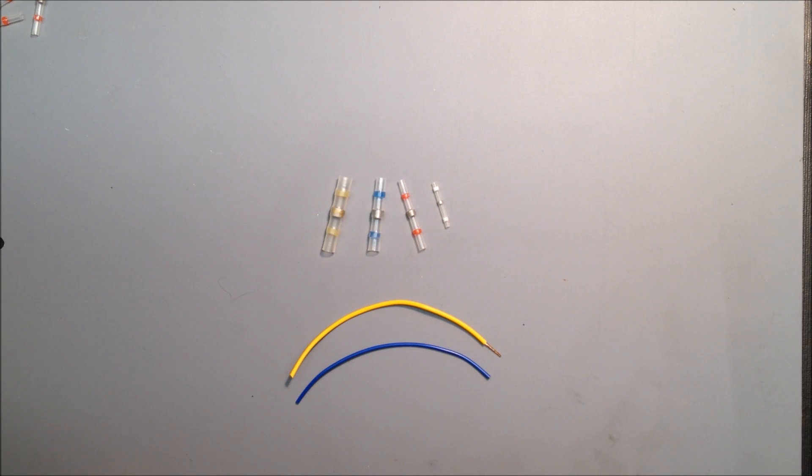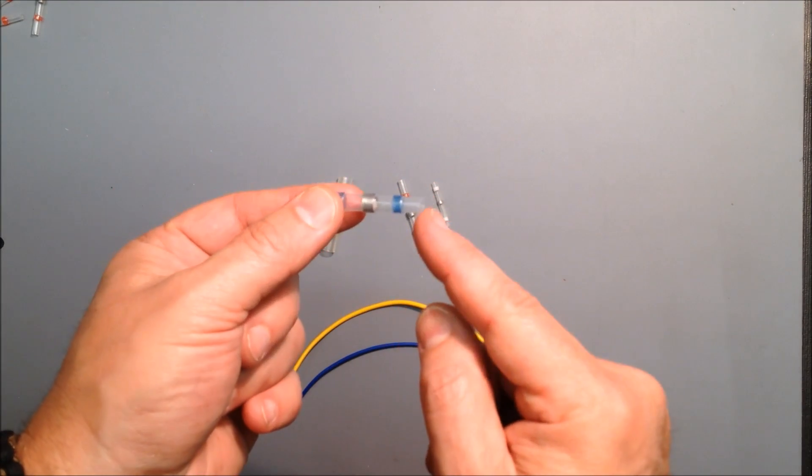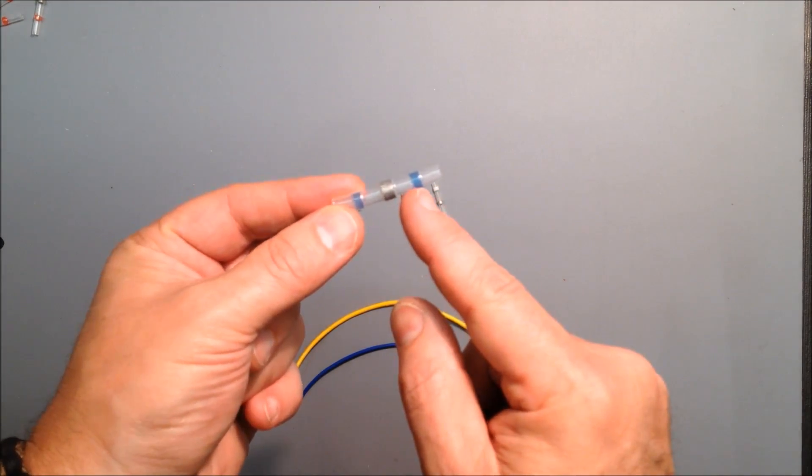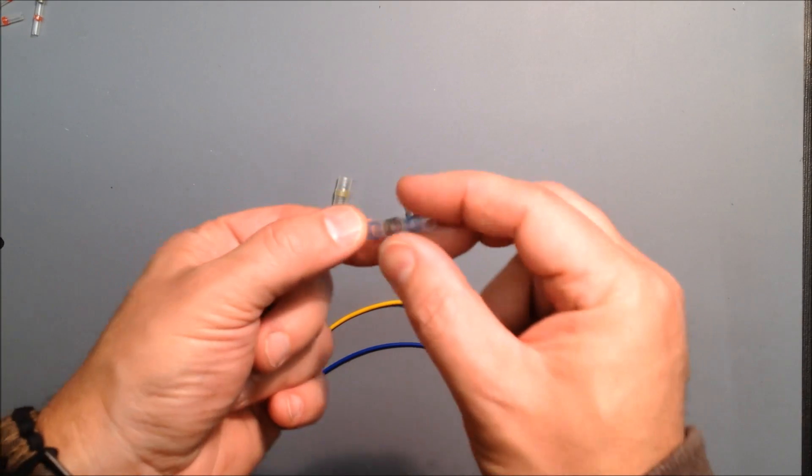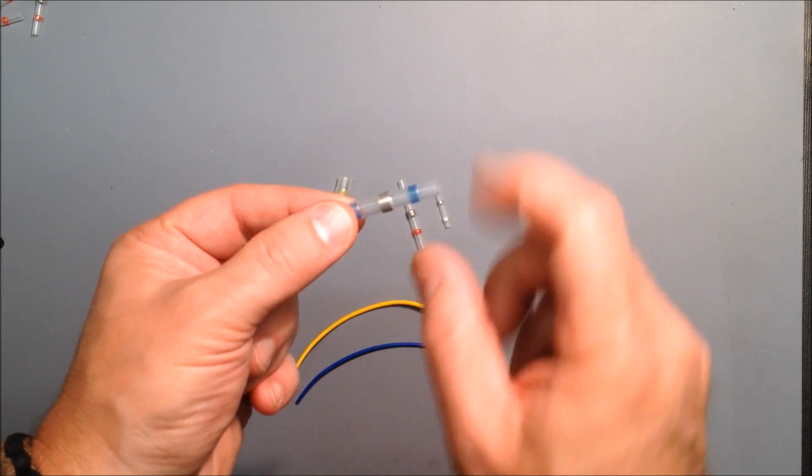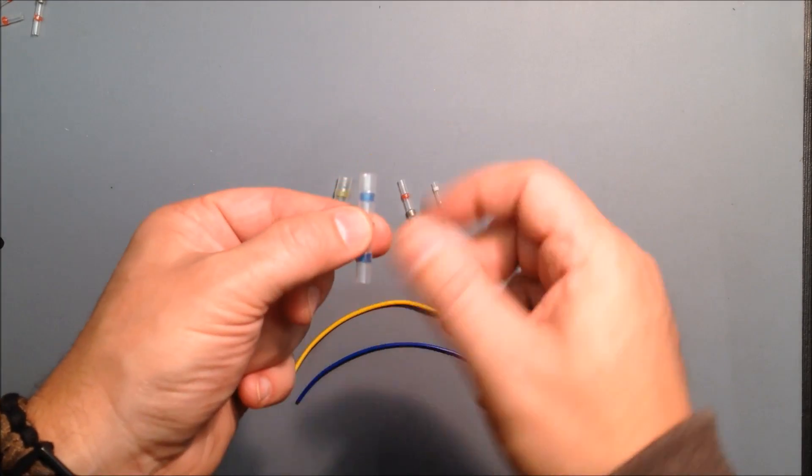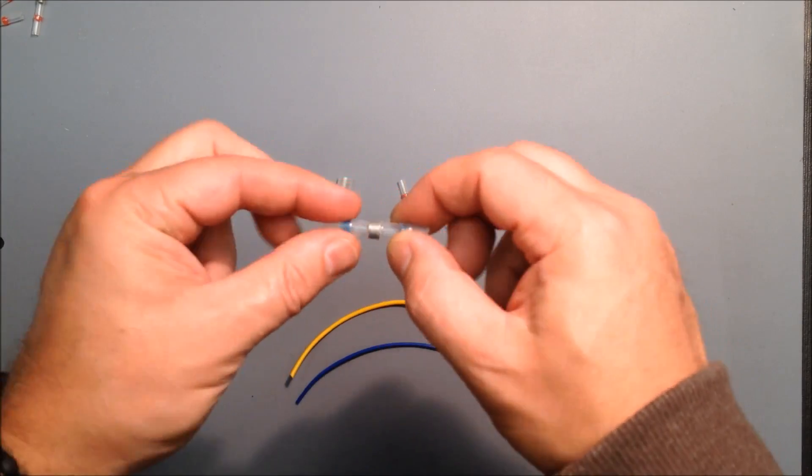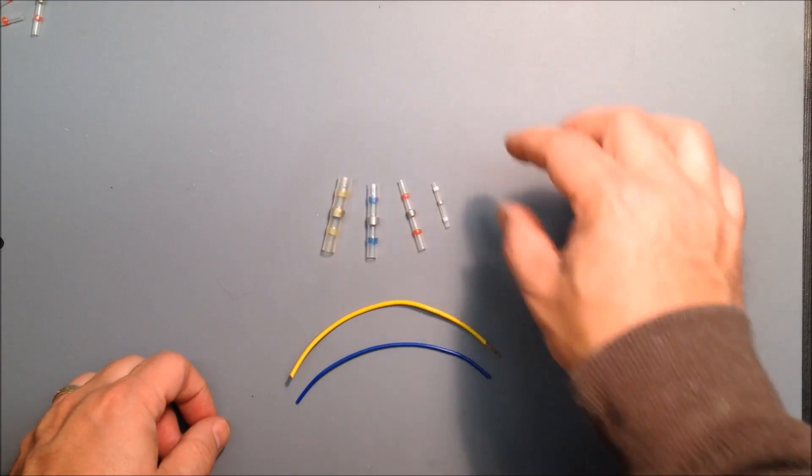I'm showing you some solder sleeves for wire splicing and repair. These are really interesting little devices. They're heat shrink tubing that shrinks when it gets hot. The color spots are actually glue that melts and sticks to the wires, and then the center part is actually low melt solder that mixes with the metal parts of the wires. Once this is heated up on the wires, it glues them together and solders them together all in one time. It's really handy stuff.